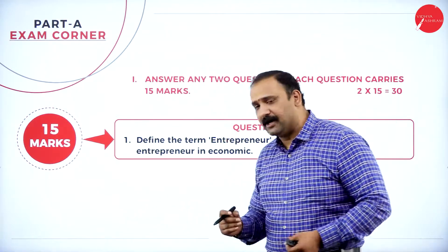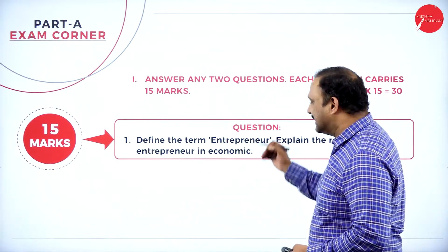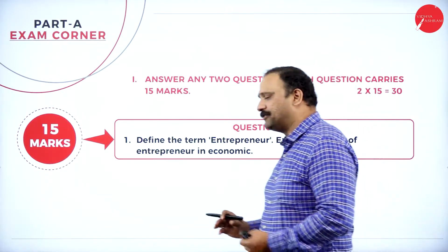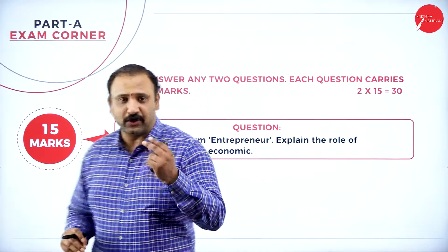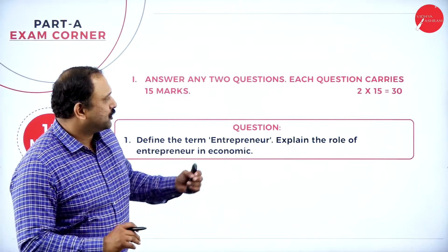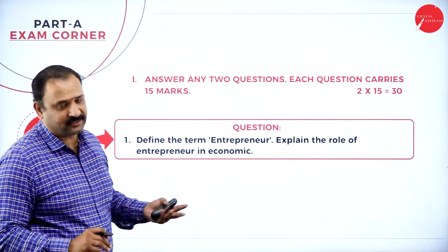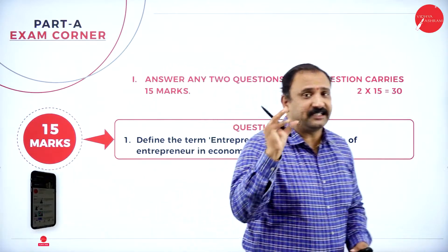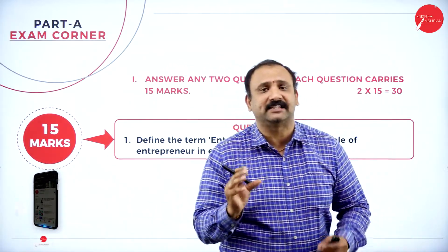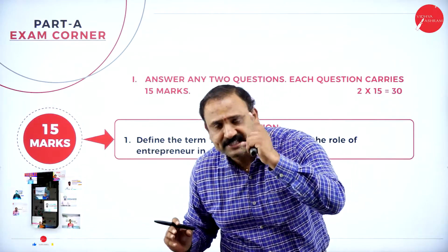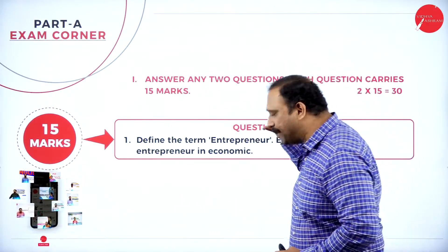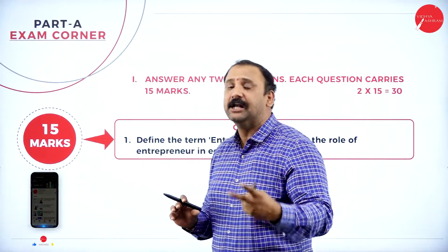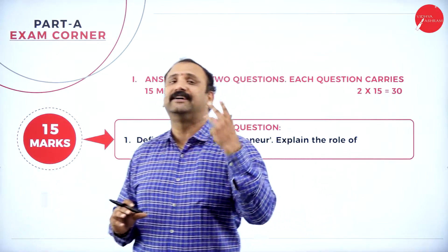The first question is: define the term entrepreneur and explain the role of entrepreneur in economics. In the first part you're going to have two questions of 15 marks each, that's 30 marks total — very important because 30 marks is a big weightage from one single section.